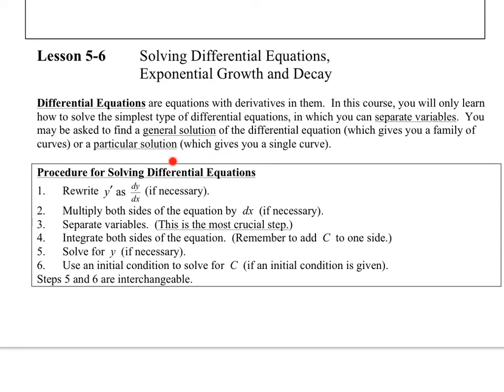You may be asked to find a general solution, and then a particular solution. This is where you find the c value. You add the c to the general solution, that will give you all of them.